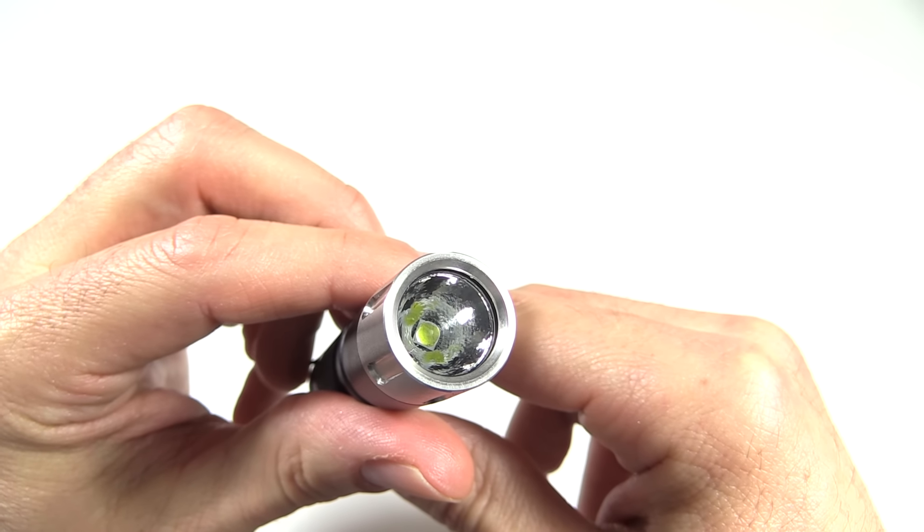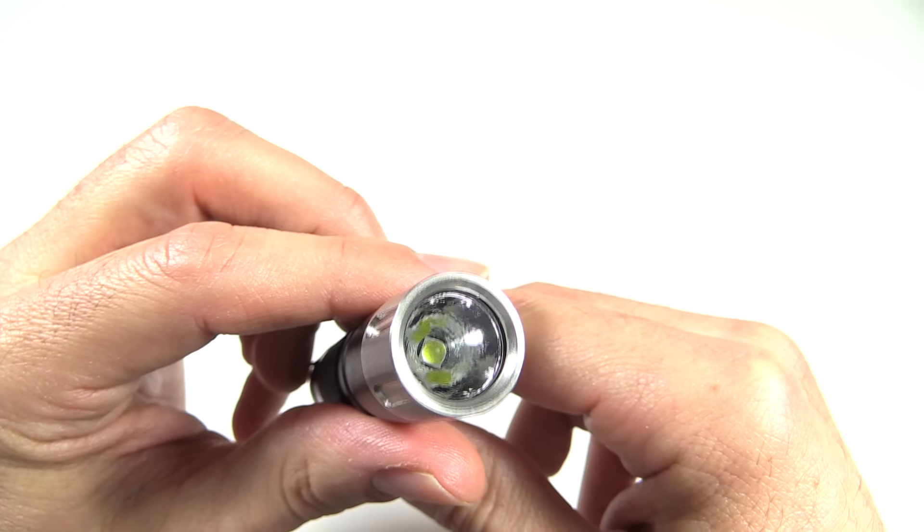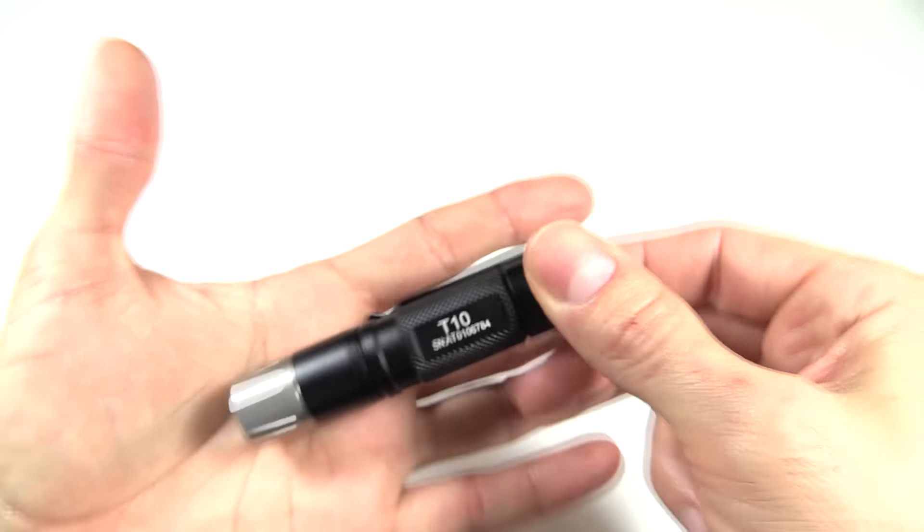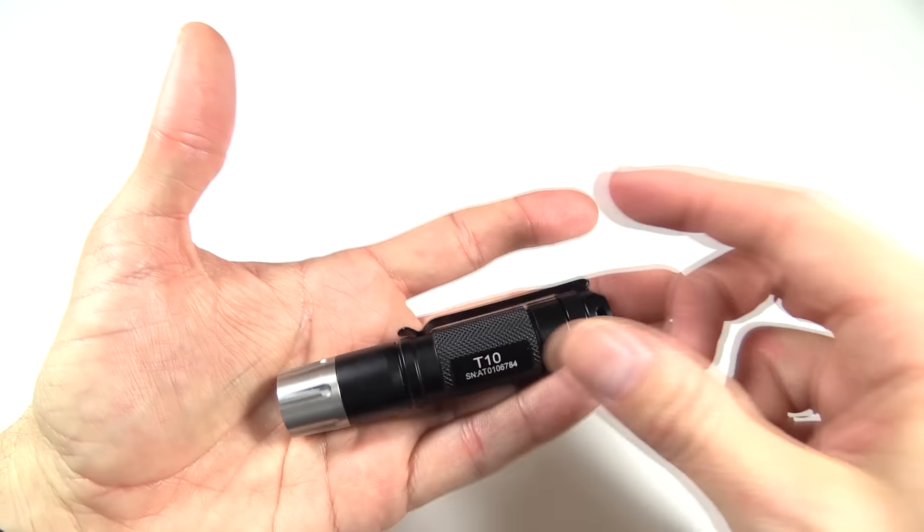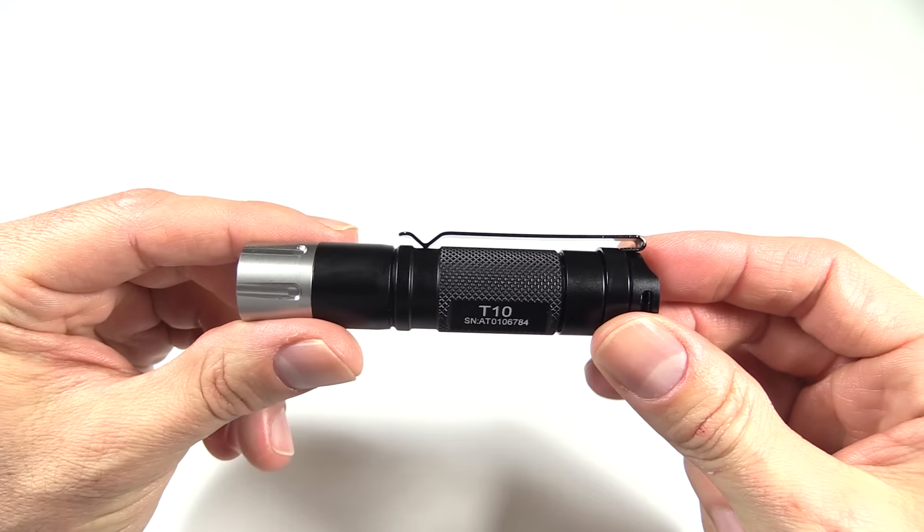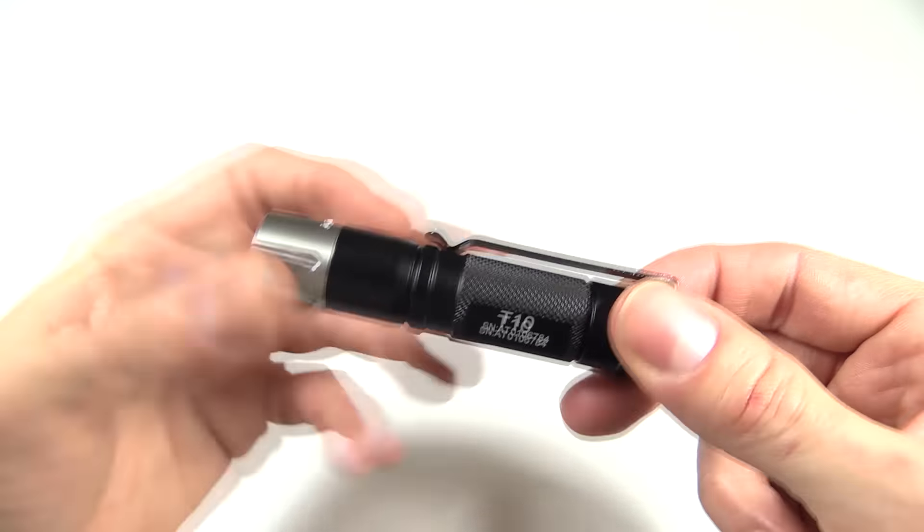It does come in both a cool white and a neutral white, I believe, as well. So let's have a look at this. Here's the size of it. It's nice and small. Generally, I'm actually not that fond of AA lights, but having carried this one around, it actually is pretty small in the pocket.